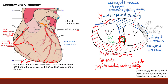In summary, if you remember this picture, you remember pretty much everything you need to know about what arteries supply what part of the heart. The only thing not shown is that the anterolateral papillary muscle is supplied by both the left circumflex and the left anterior descending, and then the posterior medial papillary muscle from the posterior descending artery.